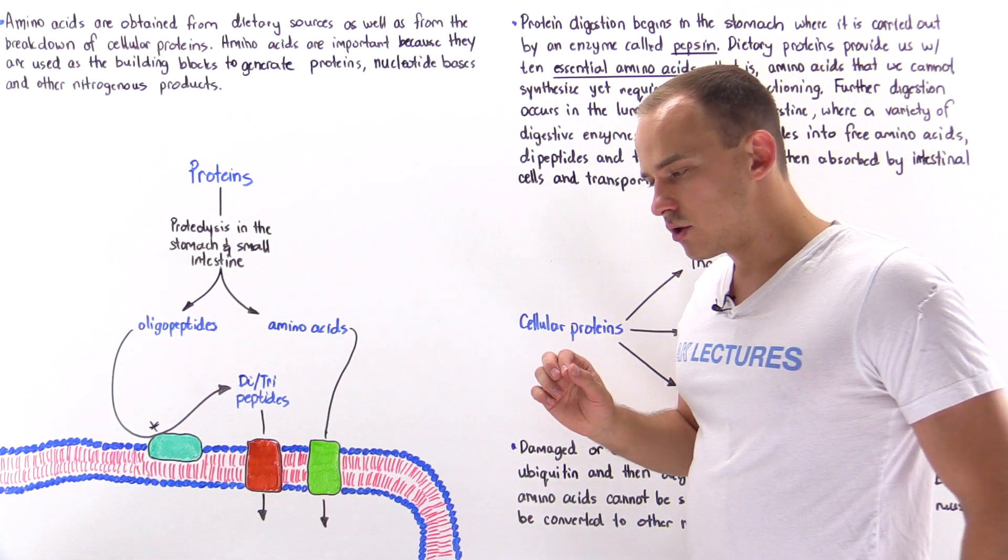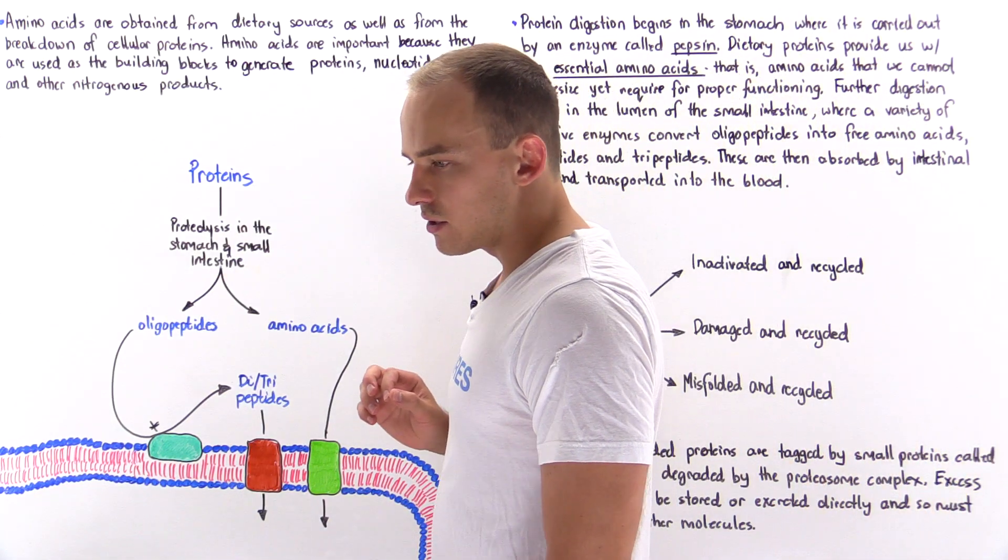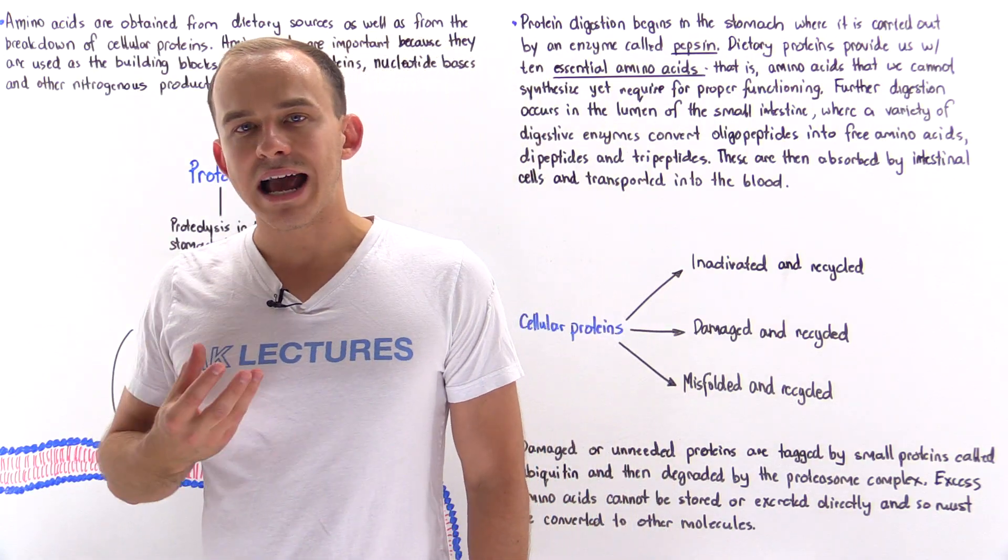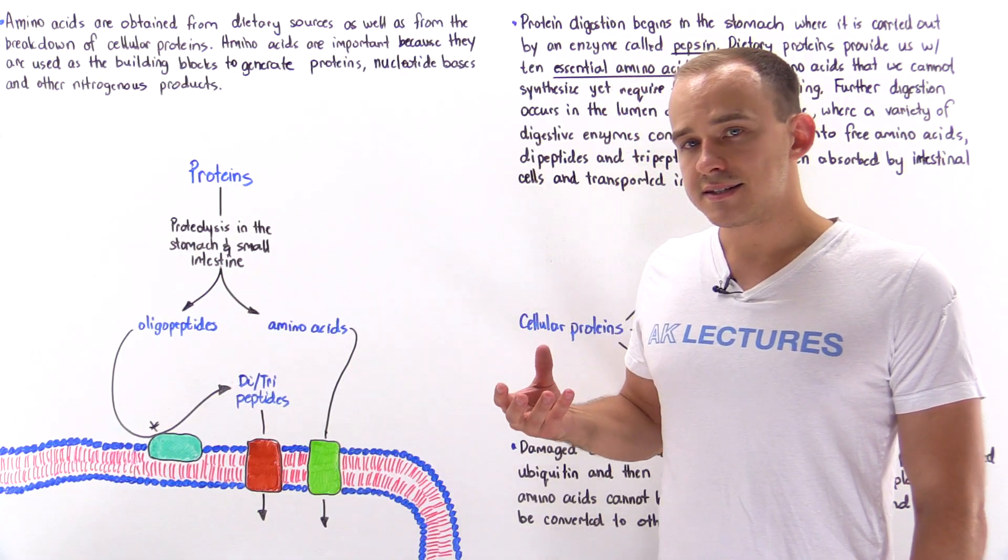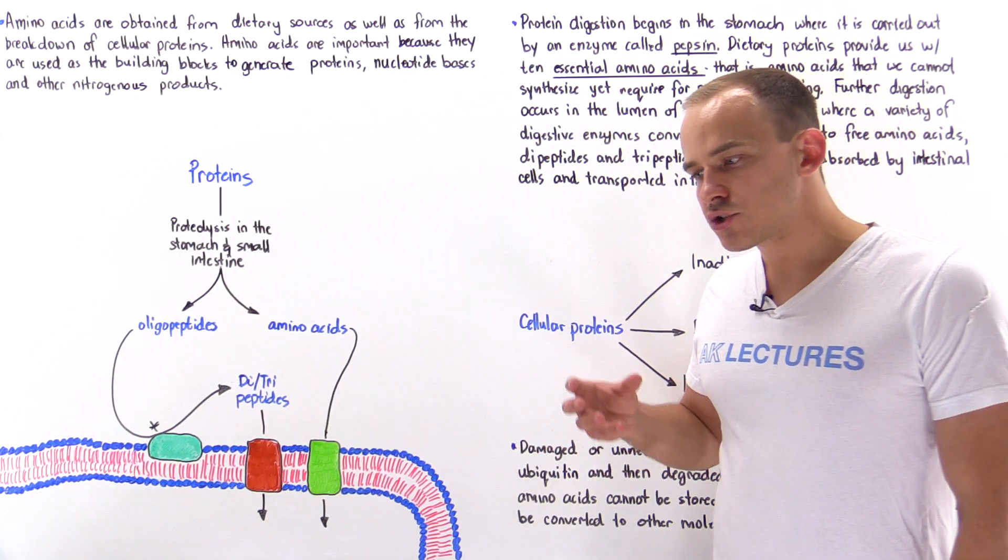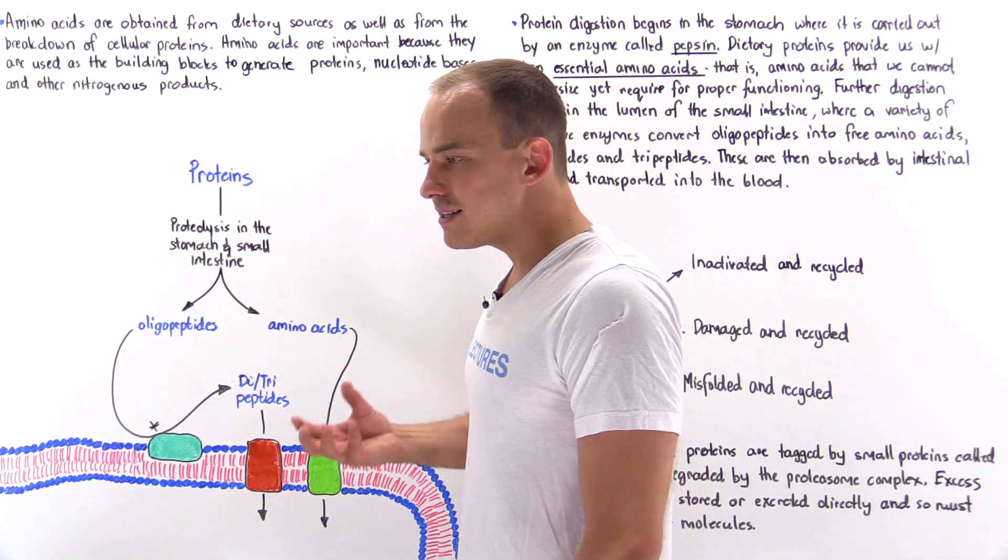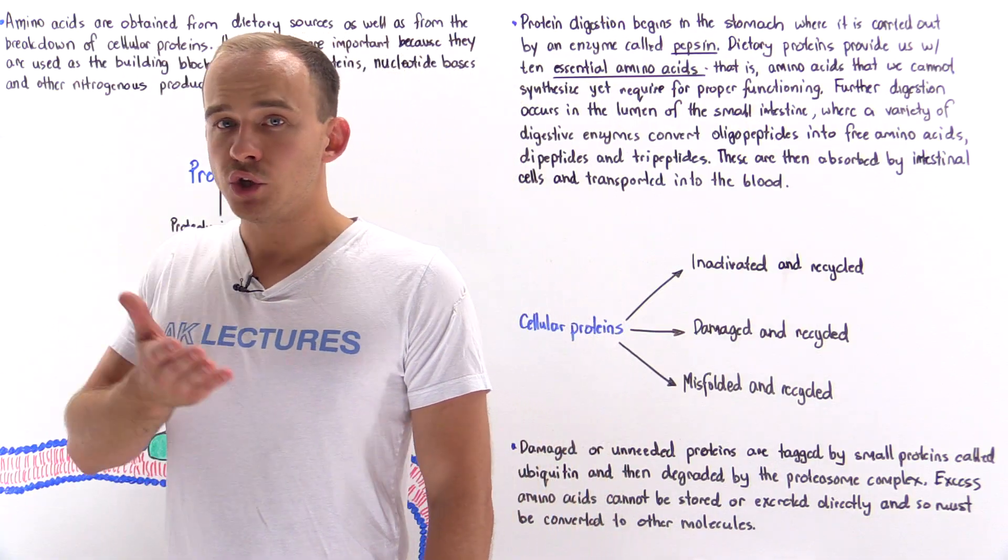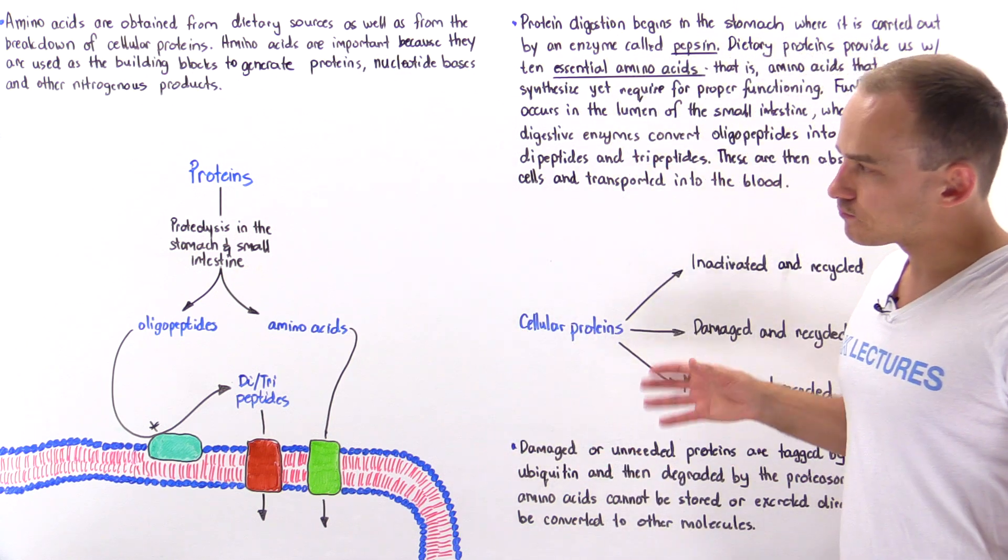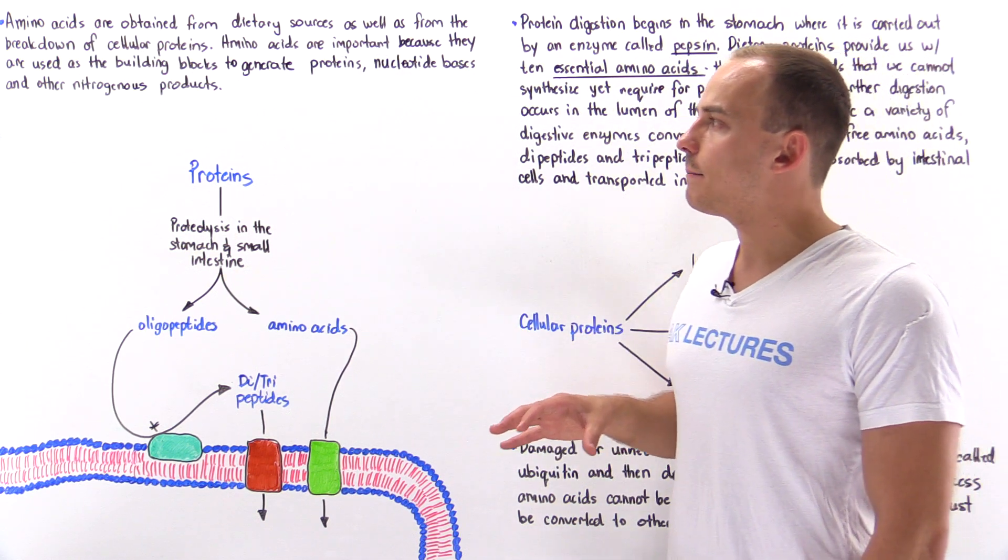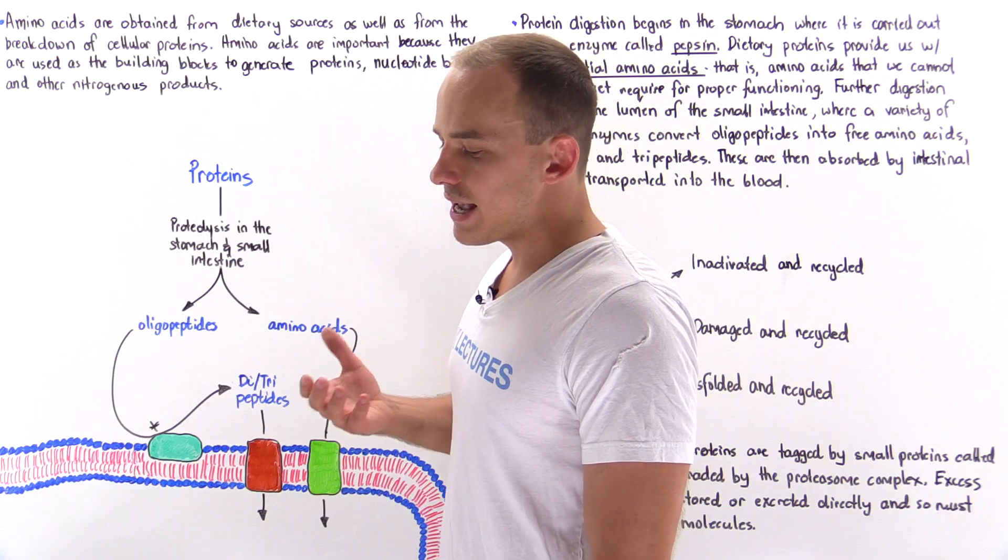Unlike fatty acid molecules or glucose molecules, amino acids are not stored inside our body. If we have excess amino acids, we cannot store them in the same way that we can store glucose as glycogen or fatty acids in fat cells. So what happens to these excess amino acids?